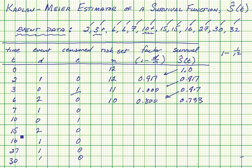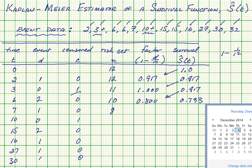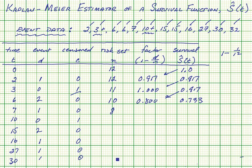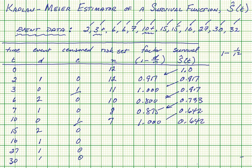At time seven, we take two from ten to leave eight for the risk set. We have one failure, so seven out of eight survive — that's 0.875. We do the multiplication and get 0.642. One from eight leaves seven. At time ten, we have one censored item, no failures, so the factor is 1.00, giving us 0.642. The risk set is now six.